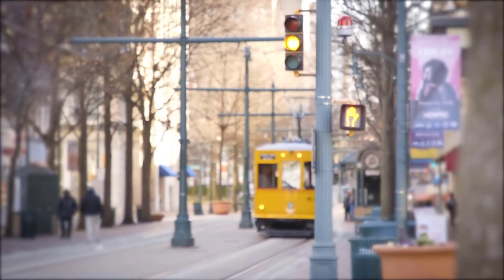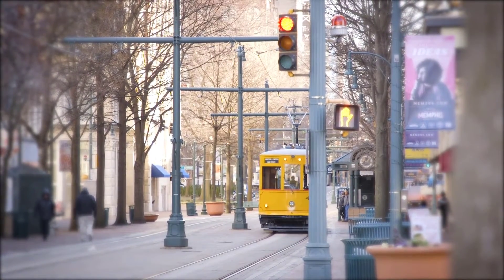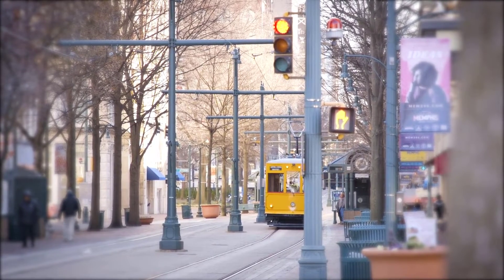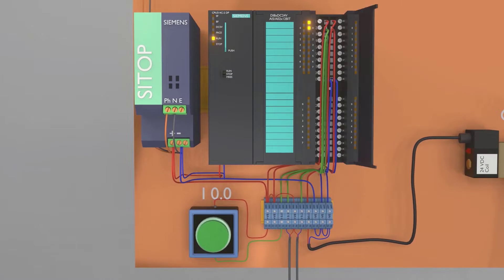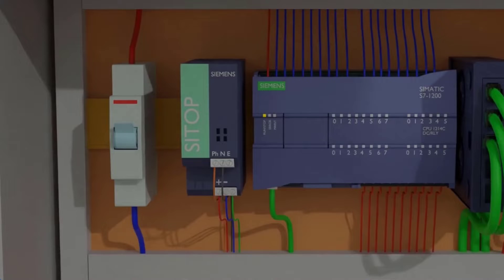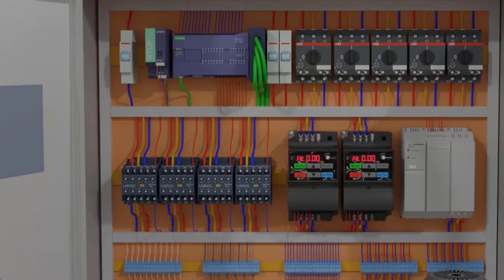PLCs can also be found in traffic signal control systems. They manage the sequencing of traffic lights to control the flow of vehicles and pedestrians at intersections. Examples of PLCs include Siemens S7-300 and S7-1200.